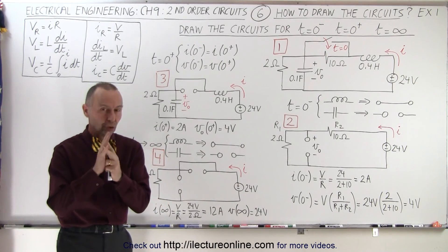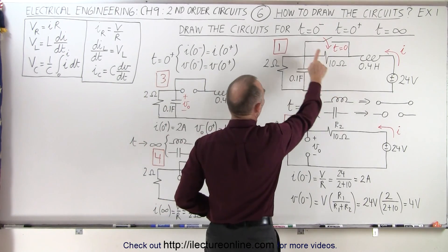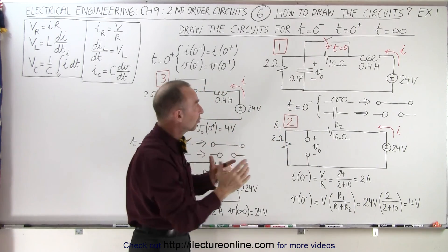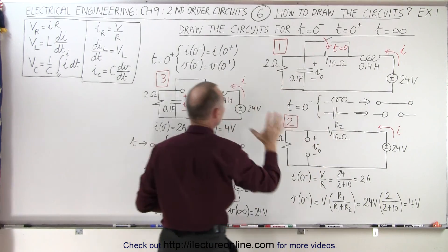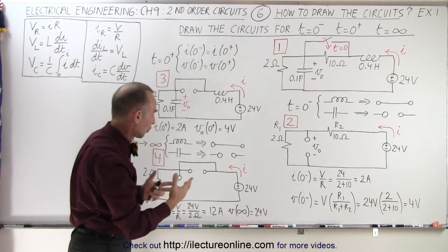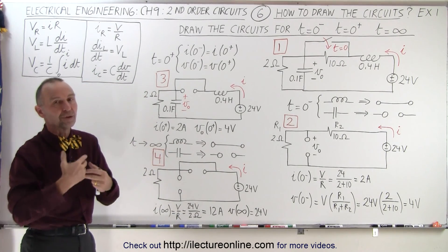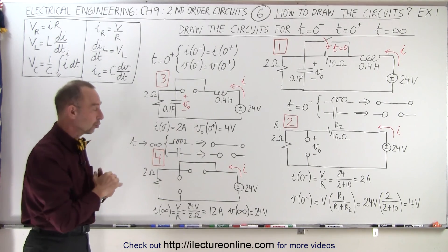Remember, there are three circuits you want to draw relative to the original problem. You want to draw the circuit when time just before the event happens. In this case, the event is where this particular switch closes. Then you want to draw a new circuit just after the event has happened. And then you want to draw a circuit when time has elapsed for a long time as time approaches infinity, so to speak, when you're past the transient stage and now you're in a steady state situation.